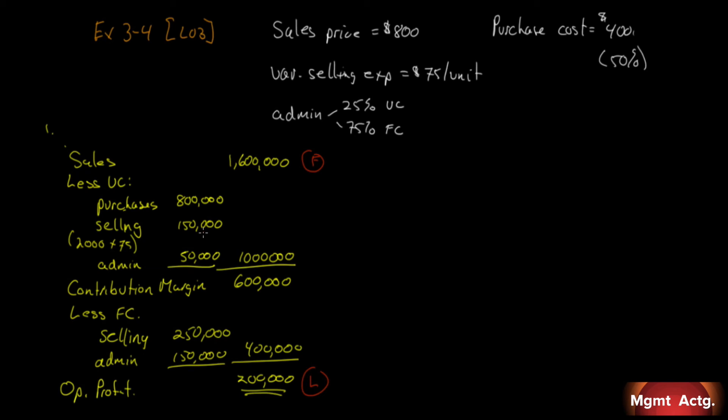Number two: What was the contribution towards fixed expenses and profits from each guitar sold during the quarter? We have a total of $600,000 for everything, but we want to know what that is per guitar. We sold 2,000 guitars, so $600,000 divided by 2,000 guitars equals $300. For every guitar we sold for $800, $500 went to cover variable costs, and we had $300 left over as our contribution towards fixed costs.